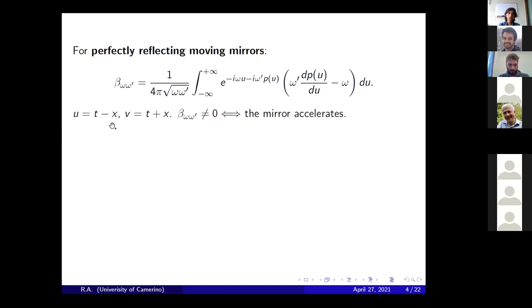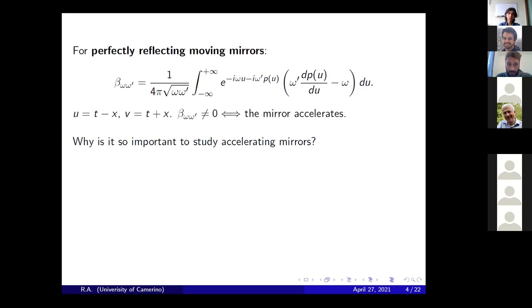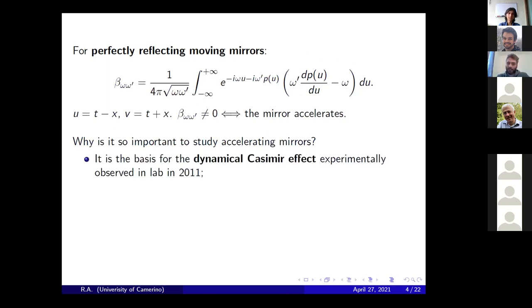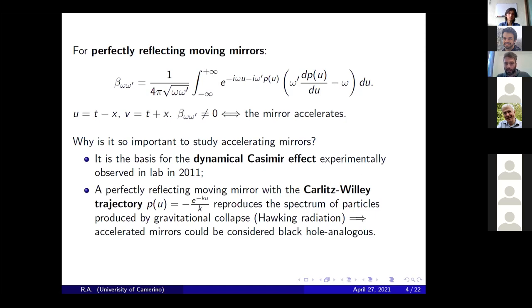The beta Bogoliubov coefficient being non-zero — which occurs if and only if the mirror accelerates — gives particle production. The trajectory of the mirror is specified by the function p(u), indicating the mirror position v as a function of the null variable u. Accelerating mirrors are important because radiation from them was experimentally proved via the dynamical Casimir effect. Furthermore, the perfectly reflecting mirror with a particular trajectory — the Carlitz-Willey trajectory — produces exactly the same spectrum of particles produced by gravitational collapse, including Hawking radiation from black hole collapse. Hence, accelerated mirrors serve as black hole analogues.